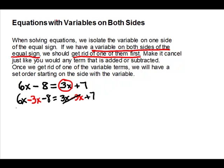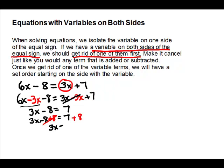That cancels on the right side. On the left-hand side, 6x minus 3x gives us 3x. Now we have a standard two-step equation. We go to the side with the variable and take off anything that's added or subtracted. We're going to take off the 8 — it's subtracted, so we need to add to make it cancel.